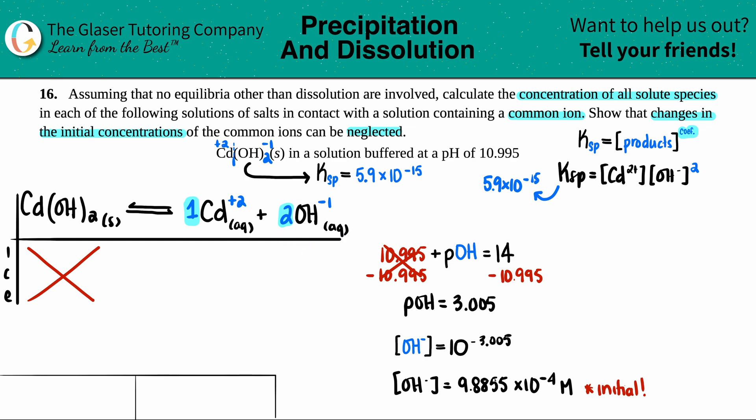Remember, solids don't get included for the purposes of this chart. No one cares about the solid. The initial hydroxide concentration is what we had here, so 9.8855 times 10 to the negative 4th. We did not start off with any cadmium, so I'm going to say 0. Remember, the change is the plus x or the minus x. Since we started with nothing, we can only go up from there, so this would be plus x. And this would be plus 2x. Then equilibrium, you're just combining these two. So 0 plus x is x, and this would be 9.8855 times 10 to the negative 4th plus 2x.